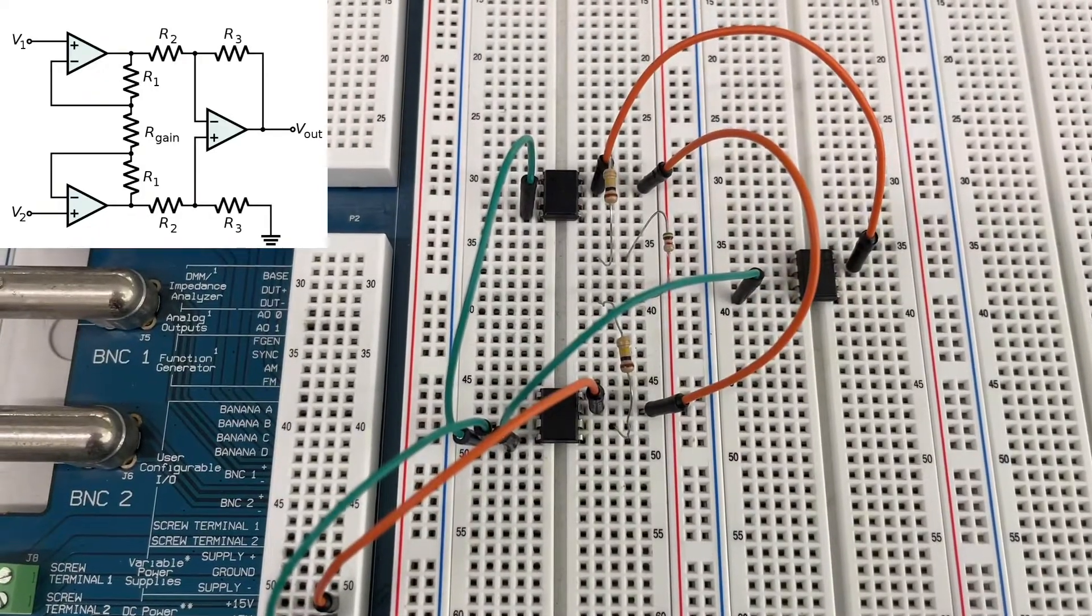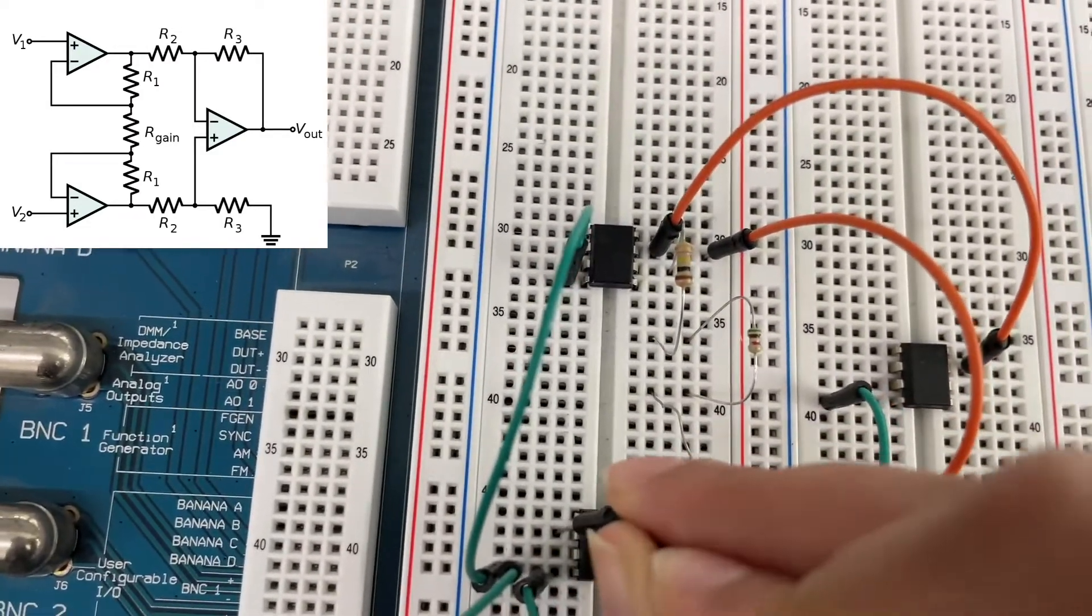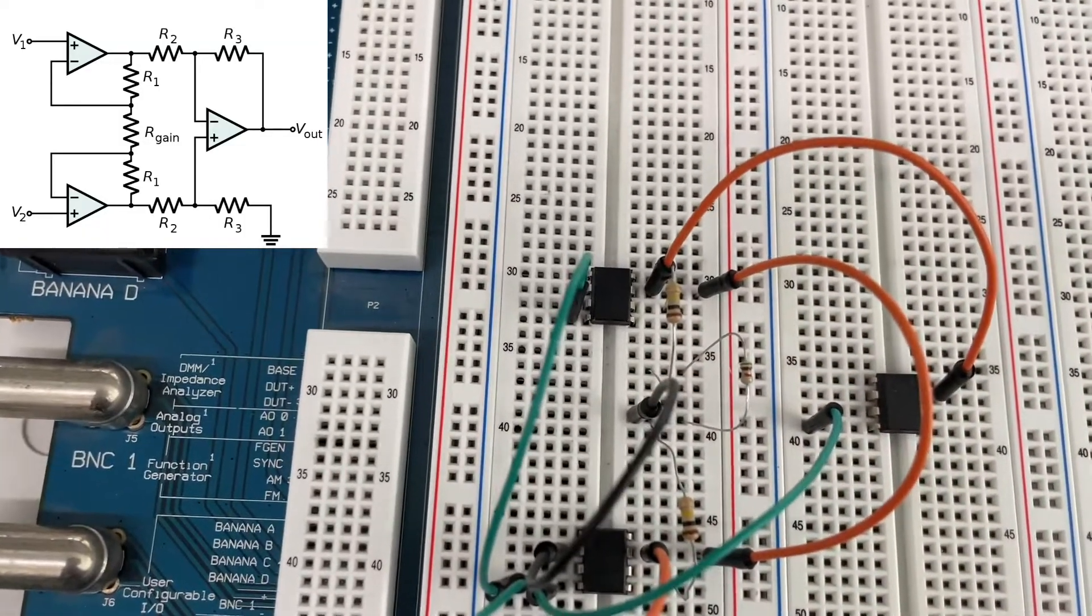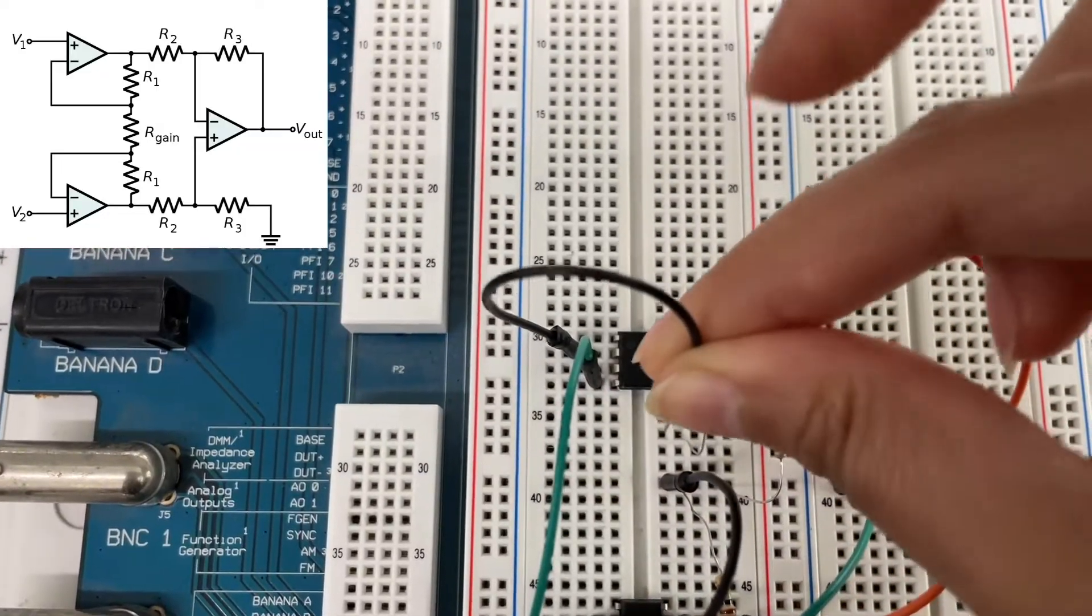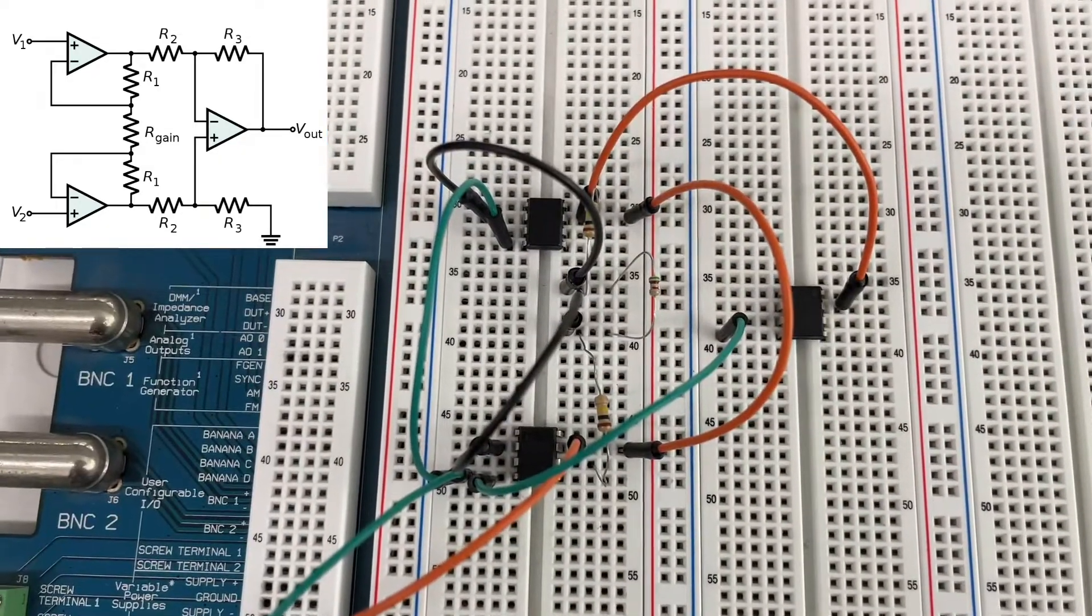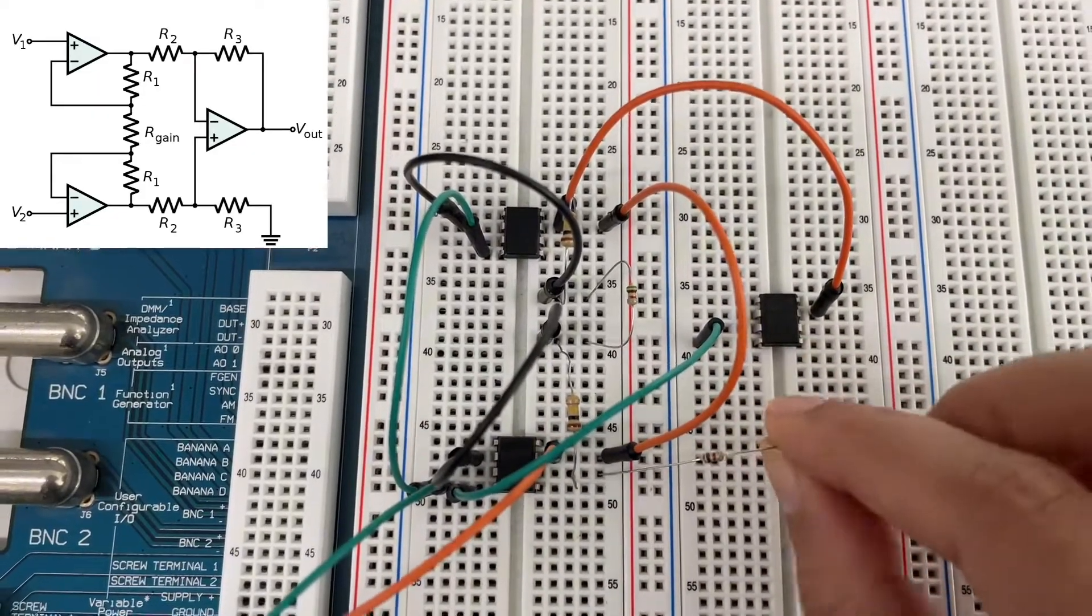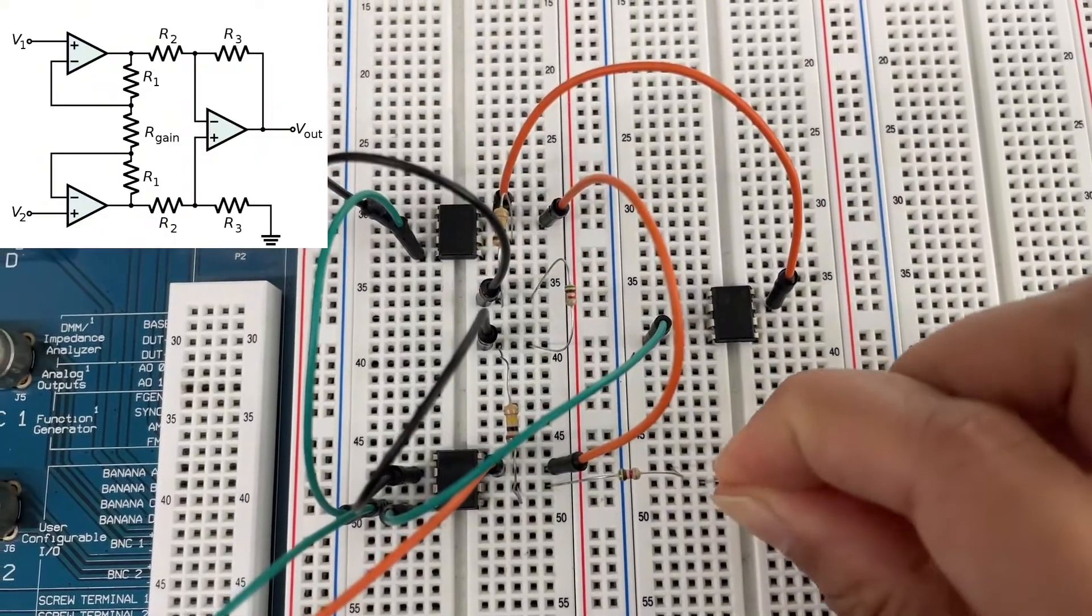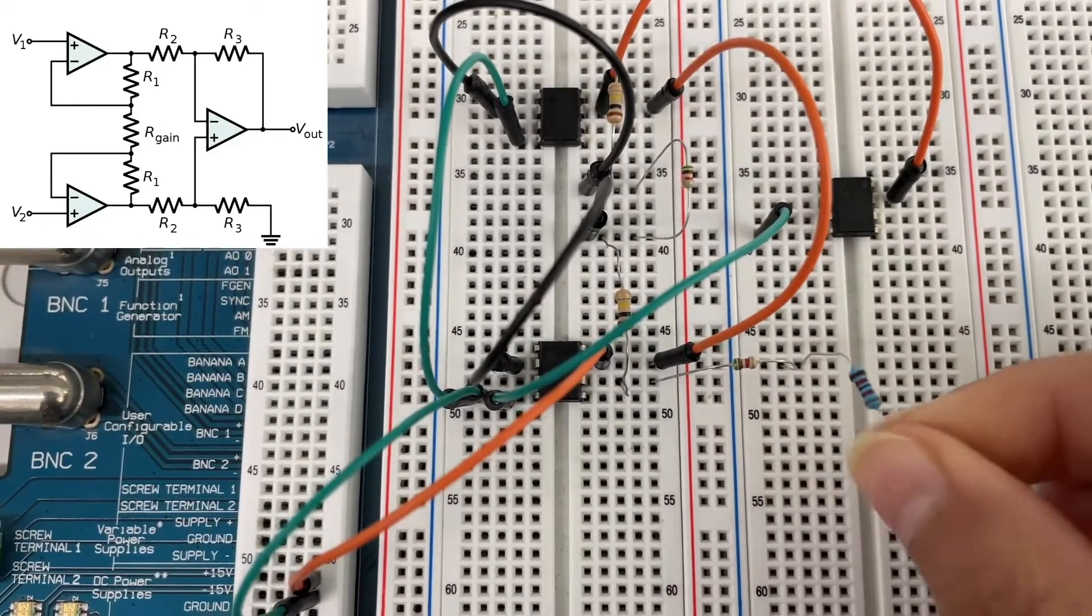There is a wire that goes from the inverting pin, pin two, to the leg of Rgain that is connected to R1. Then the same for this op amp - from pin two to this leg of Rgain connected to the R1 of the first op amp. Next is R2 which is connected from pin six to a node, after that it's connected to R3.